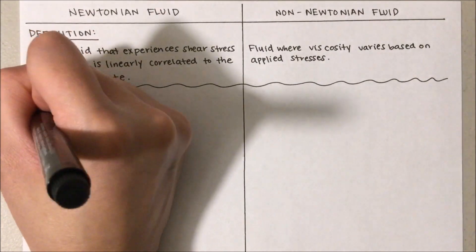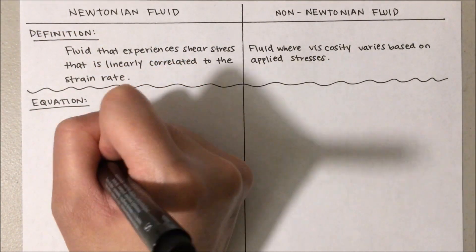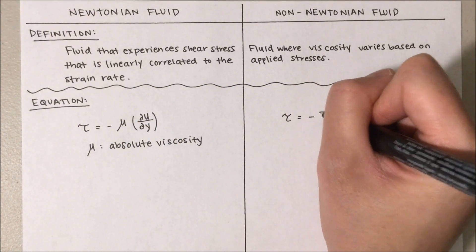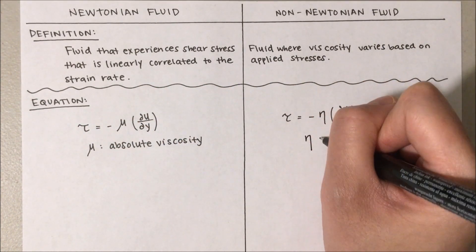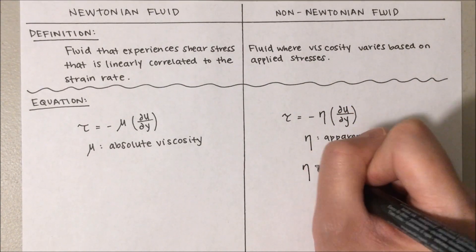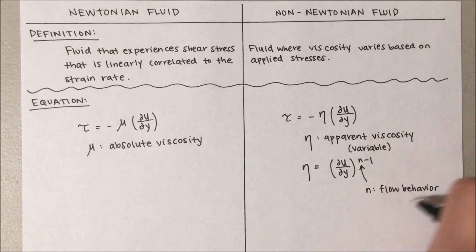Mathematically, for an incompressible Newtonian fluid, the shear stress is the absolute viscosity times the partial derivative of the velocity with respect to the height of the liquid. Whereas the non-Newtonian fluid's shear stress is the apparent viscosity with relations to the shear rate. But here, apparent viscosity is a variable dependent on shear stress.